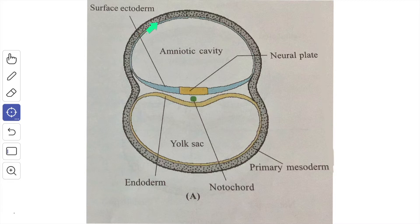The roof of the cavity is formed by a layer of flattened cells known as the amnioblast, which lines the inner aspect of the cytotrophoblast. The floor of the cavity is formed by the tall columnar cells of the ectodermal layer of the germ disc.